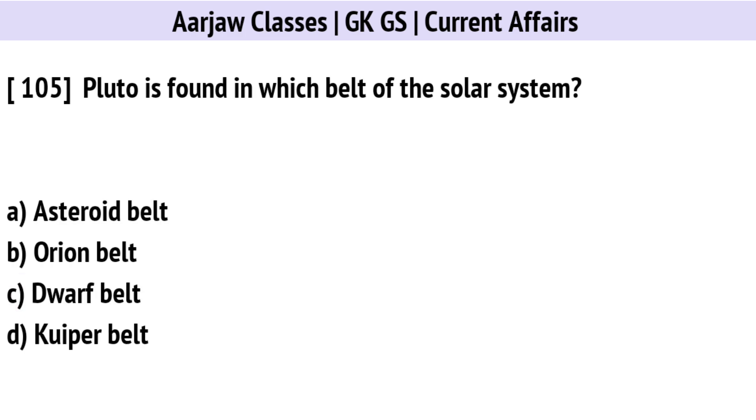Pluto is found in which belt of the solar system? Correct option is D: The Kuiper Belt.